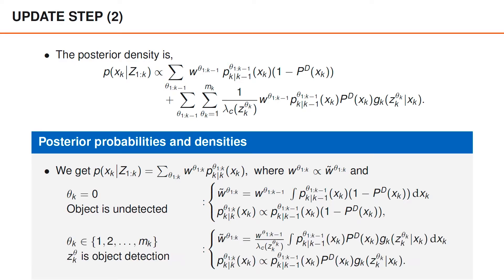The weights and densities for the hypotheses where theta_k is larger than zero are obtained in a similar manner. The unnormalized weight is the integral of this function, whereas the densities for these hypotheses are proportional to the same function. If you look at the densities, you can see that it is the same type of update that we have performed previously, and the only difference is that the predicted density given theta_{1:k-1} is used as a prior to the specific update.